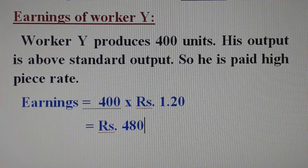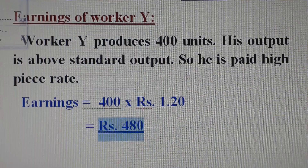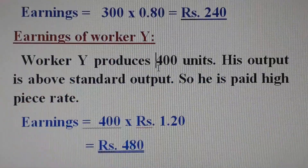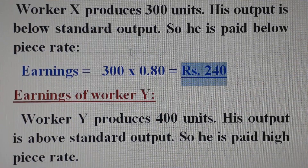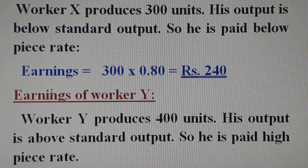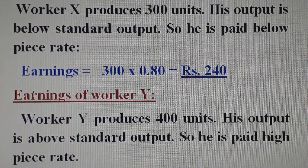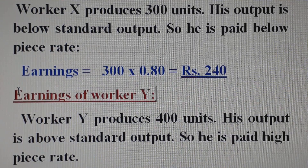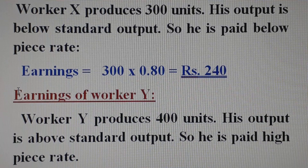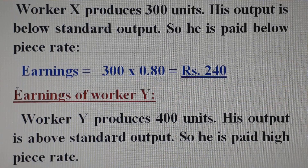So we have two earnings: worker X earns Rs. 240 and worker Y earns Rs. 480. In Taylor's Differential Piece Rate system, worker X with 300 units is paid the lower rate, while worker Y with 400 units is paid the higher rate because Y is efficient.